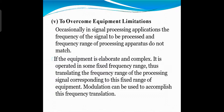To overcome equipment limitations: occasionally in signal processing applications, the frequency of the signal to be processed and the frequency range of the processing apparatus do not match. If the equipment is elaborate and complex, it is operated in some fixed frequency range. Thus, translating the frequency range of the processing signal to correspond to the fixed range of the equipment — modulation can be used to accomplish this frequency translation.